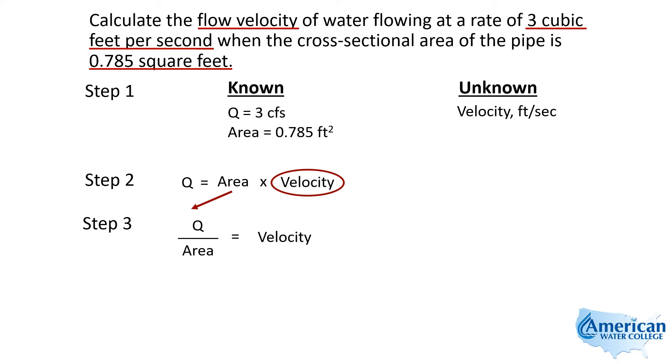Well, it's actually all done for us, so we simply plug those numbers in step 4. 3 cubic feet per second divided by 0.785 square feet gives us 3.8 feet per second.